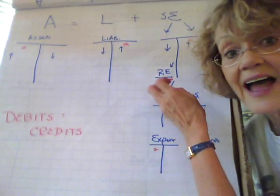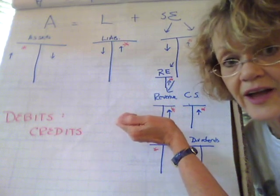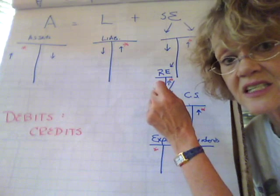Retained earnings and revenue, all those have positive increases to stockholders equity, don't they? Can you think of some accounts that are minuses to stockholders equity?